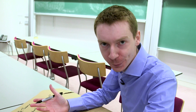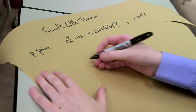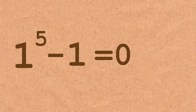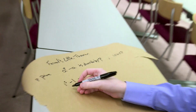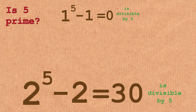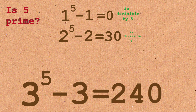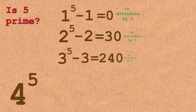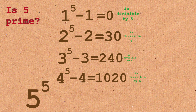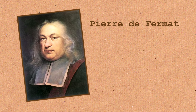Let's do an example. We know 5 is a prime. So 1 to the power of 5 minus 1 equals 0 — divisible by 5. What about 2? 2 to the power of 5 minus 2 gives 30, and that's divisible by 5 as well. 3 to the power of 5 minus 3 gives 240, also divisible by 5. 4 to the power of 5 minus 4 is divisible by 5 again. And 5 to the power of 5 minus 5 is obviously divisible by 5 too.